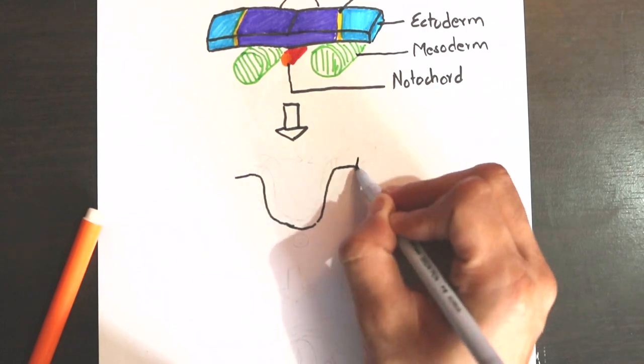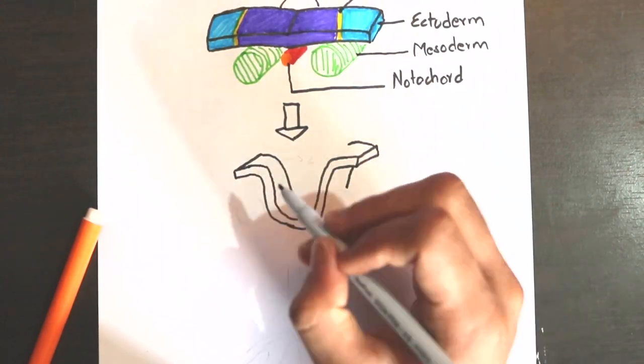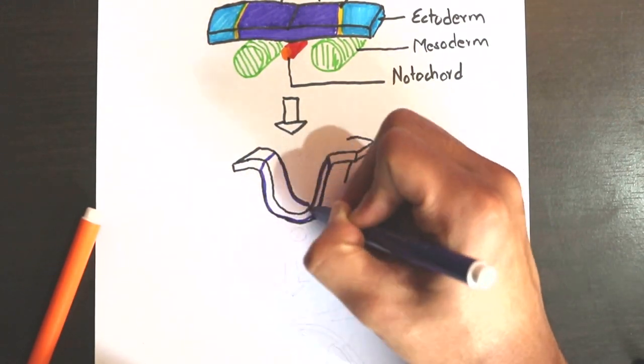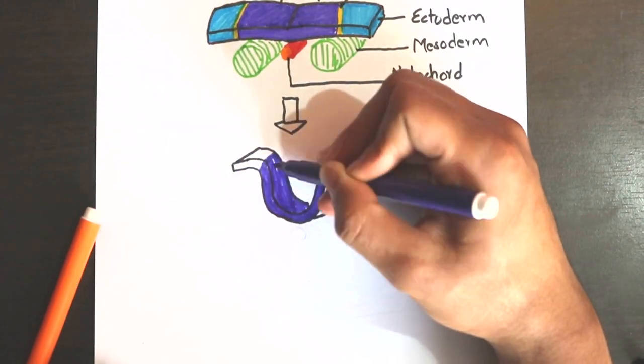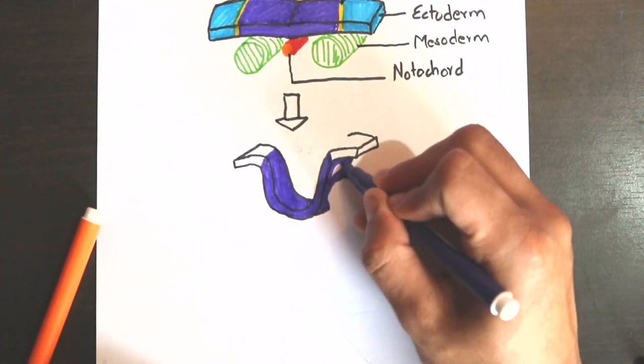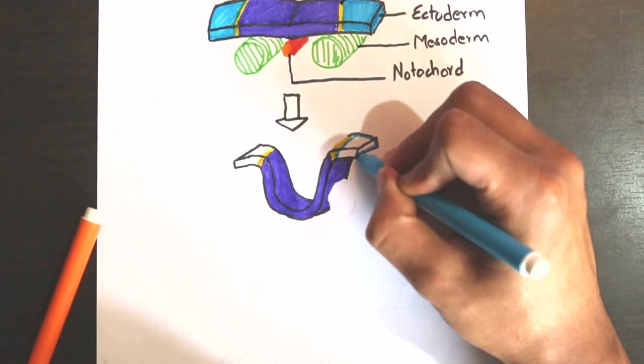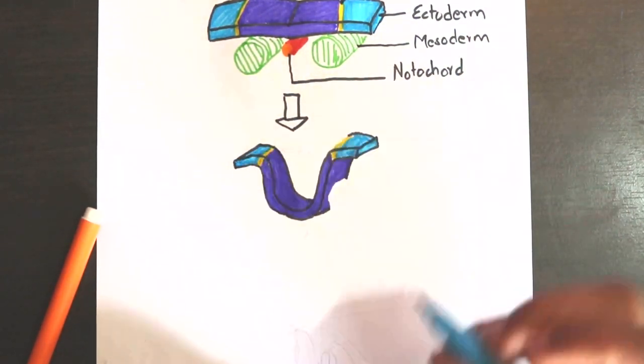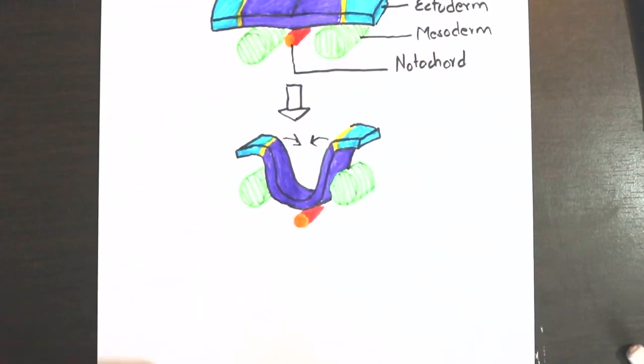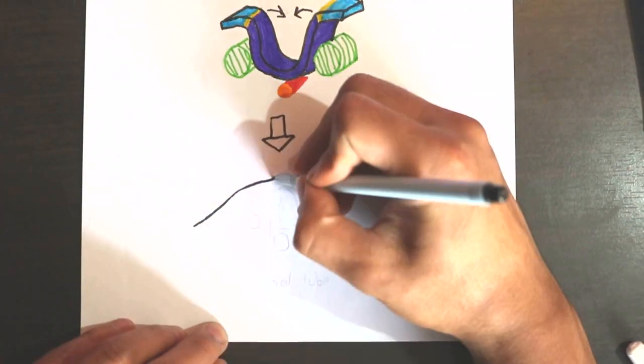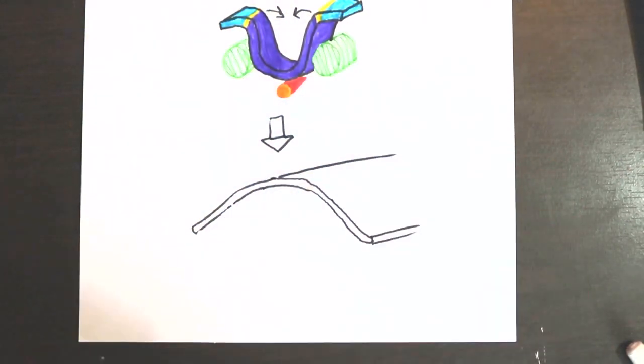The lateral edges of the neural plate then rise to form neural folds. The neural folds move towards each other and meet in the midline.